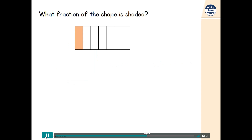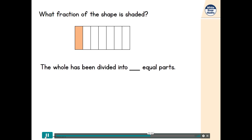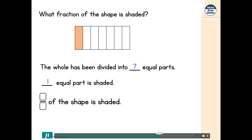Have a look at the shape. What fraction is shaded? Firstly, we count how many equal parts there are altogether. The whole has been divided into seven equal parts. Now count how many parts are shaded. Only one of the equal parts are shaded, so one seventh of the shape is shaded. Because it has a numerator of one, we can say one seventh is a unit fraction.